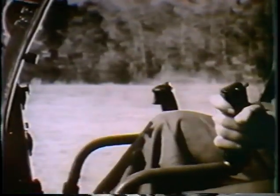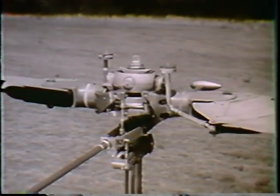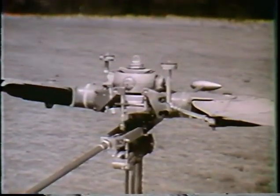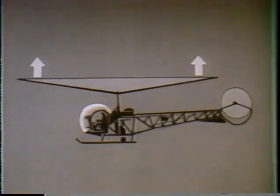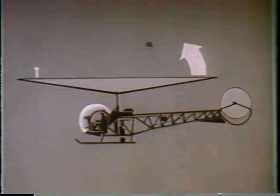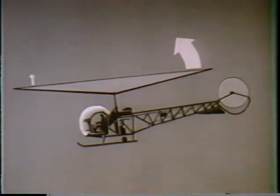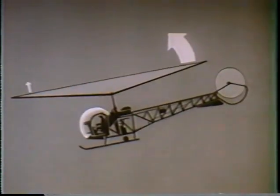A change in the cyclic control, on the other hand, increases the pitch of one blade and at the same time decreases the pitch of the other blade an equal amount. Therefore, it does not affect the overall lift which is being produced. Instead, it increases the lift on one half of the rotor disc and decreases the lift on the other half. This will cause the rotor disc to tilt in the direction of the lesser lift. And, since a helicopter moves in the direction in which the disc is tilted, the cyclic control provides us with the means of controlling the direction of flight.